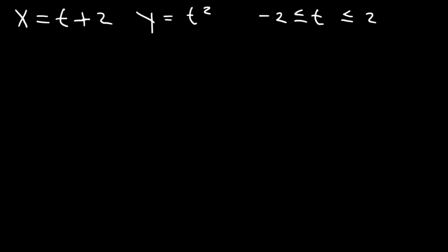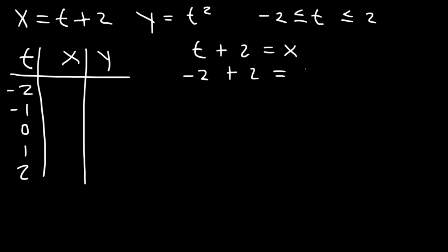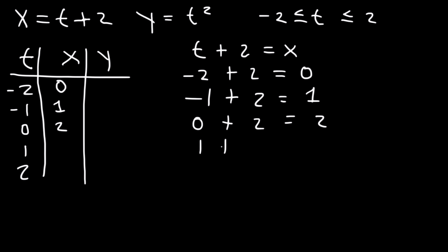The best way to graph this particular equation is to make a table with three variables: t, x, and y. The t values are going to vary from negative 2 to 2. For x, since x equals t plus 2: plugging in negative 2 gives x = 0, negative 1 gives 1, 0 gives 2 — it simply increases by 1.